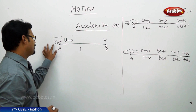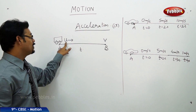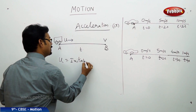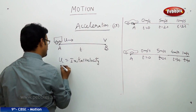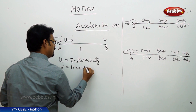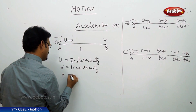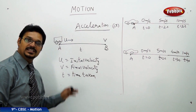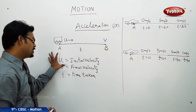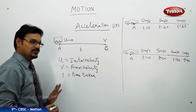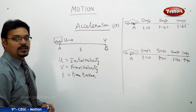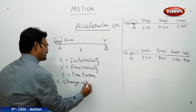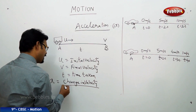See here. A vehicle moving with initial velocity u. u represents initial velocity, v is final velocity, t is time taken. Always use the same symbols in physics: initial velocity is u, final velocity is v. Now, what is the acceleration defined as? Acceleration is defined as change in velocity divided by time taken.